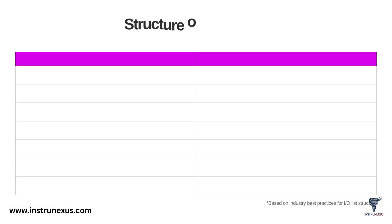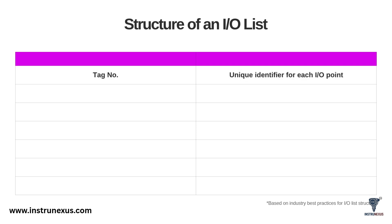Let's look at the anatomy of a typical IO List. While formats can vary, they all contain the same core information, as shown in this table, which is based on industry best practices. Every single IO point gets a row, and each column details a specific parameter. Tag No. is the unique identifier for the IO point, like LT-1001. Service is a plain English description of the point's function, like 'Tank 1 level.'